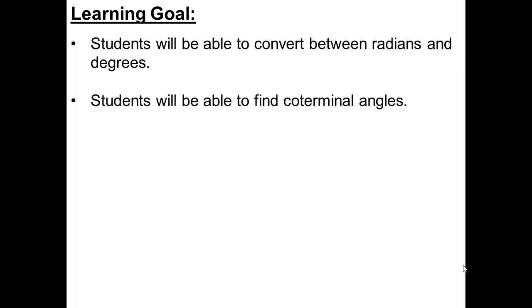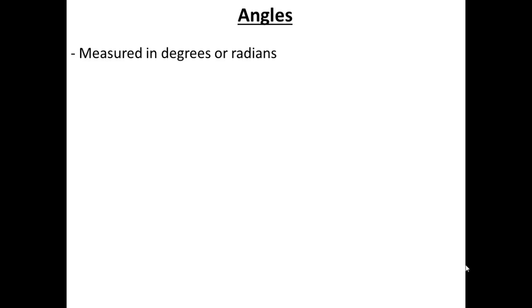We're also going to be able to find coterminal angles at the end of the lesson. So let's start with the concept of how we measure angles. You can measure an angle in either the unit called a degree or a completely different unit called a radian. We've been using degrees since elementary school, so my expectation is that you know exactly what a degree is. If I asked you what's the definition of a degree, my guess is you probably have no idea.